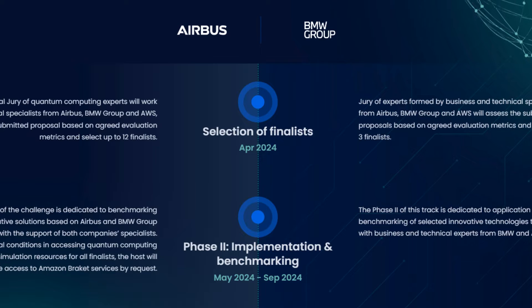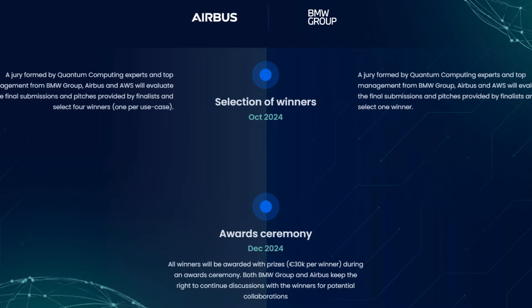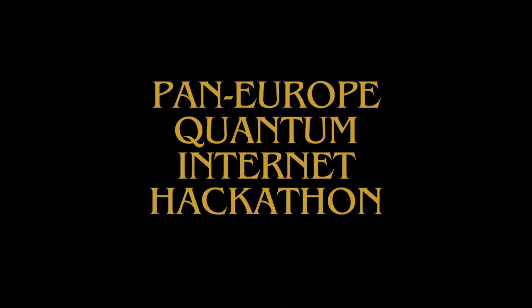Phase two — Implementation and Benchmarking: this phase is dedicated to benchmarking innovative solutions based on Airbus and BMW Group datasets, with the support of both company specialists. To ensure equal conditions in accessing quantum computing hardware and simulation resources for all finalists, the host will provide access to Amazon Braket services by request. In October the winners will be selected, and an award ceremony will be held in December 2024.